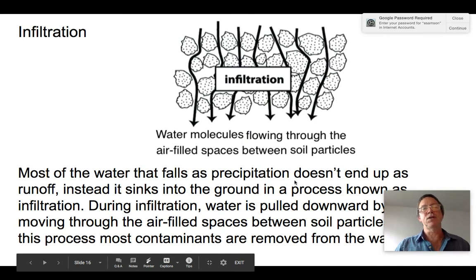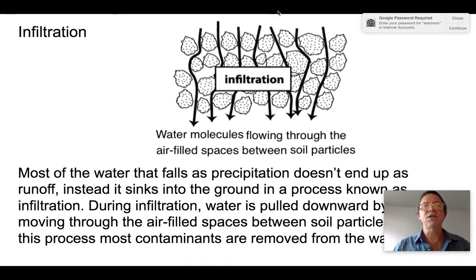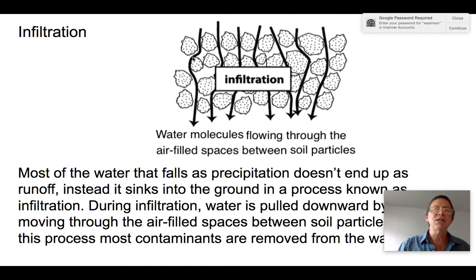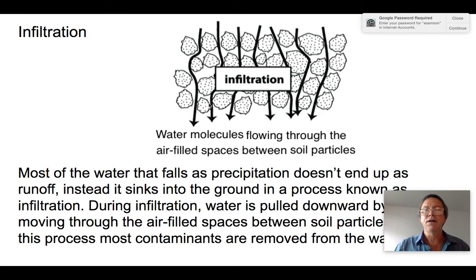In infiltration, water sinks into the ground because of gravitational attraction, moving its way between the pore spaces that exist between particles of dirt. Whereas runoff is parallel to the surface of the Earth, infiltration is parallel to the gravitational force vector — water moves downward. As water slides past these particles, pollutants tend to get pulled out by clay particles, so infiltration has the benefit of, to some extent, purifying water.